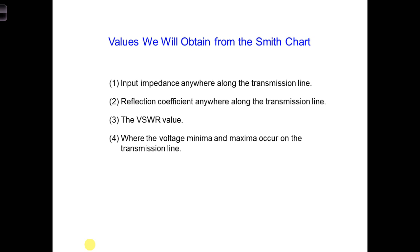For example, listed here are all the values we can obtain from the Smith chart that we're going to use in this class. We can get the input impedance anywhere along the transmission line, which we saw last time. We can also get the reflection coefficient anywhere along the transmission line, the VSWR value, and also the locations where the voltage minima and maxima occur on the transmission line.